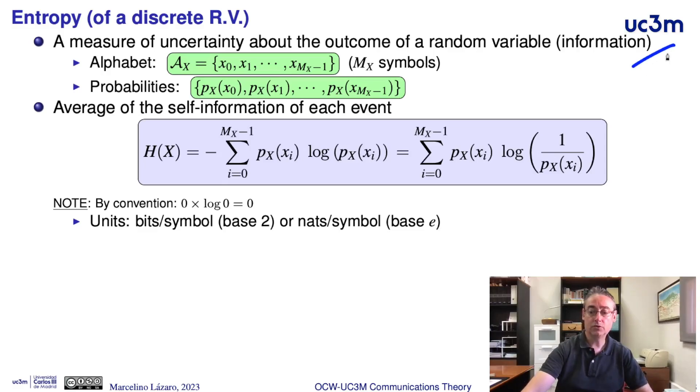This can be understood as a measure of information because the higher the uncertainty about the result of an experiment, the higher the information that we get when we know the result. If we have a random variable with an alphabet of mx symbols, mx events,